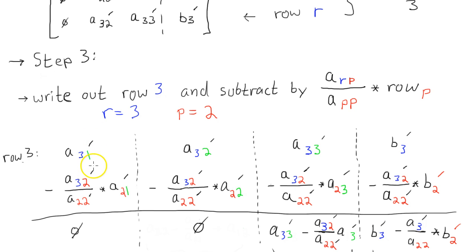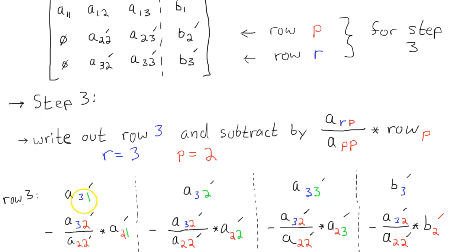Because when you come over here, a sub 3, 1. Let's see, where's a sub 3, 1. Yeah. So we'll have a zero right here. And then we'll have minus some value times a sub 2, 1. And that's zero. Or a sub 2, 1 prime. And that's zero. If we're using the first row, then it would be a sub 1, 1. And then we'd have a value here. And we don't want that. We don't want a zero.